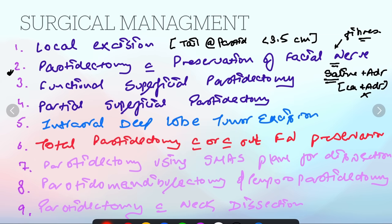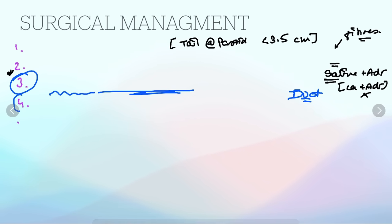Next, coming to the third option, we have functional superficial parotidectomy. In this we will remove only the superficial lobe and also the function will be protected, that is we will try to protect the duct. Next is partial superficial parotidectomy.